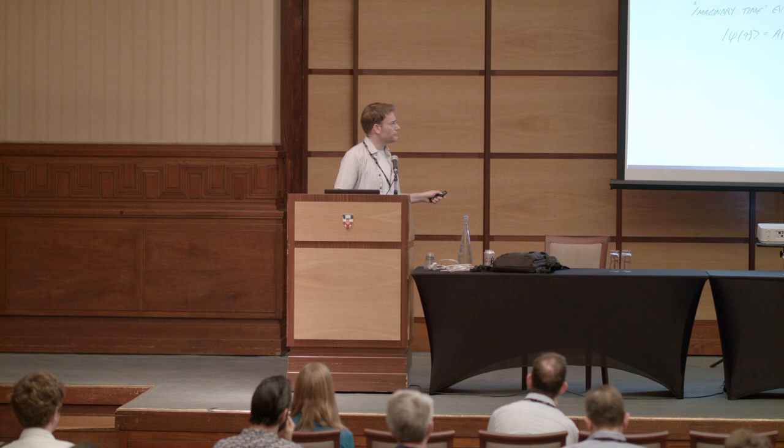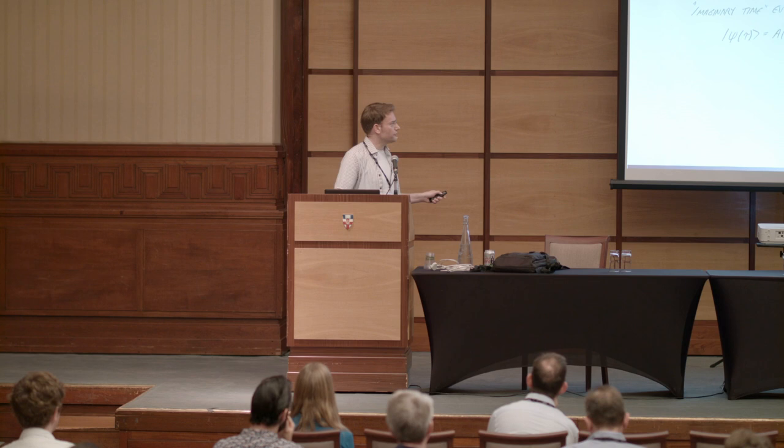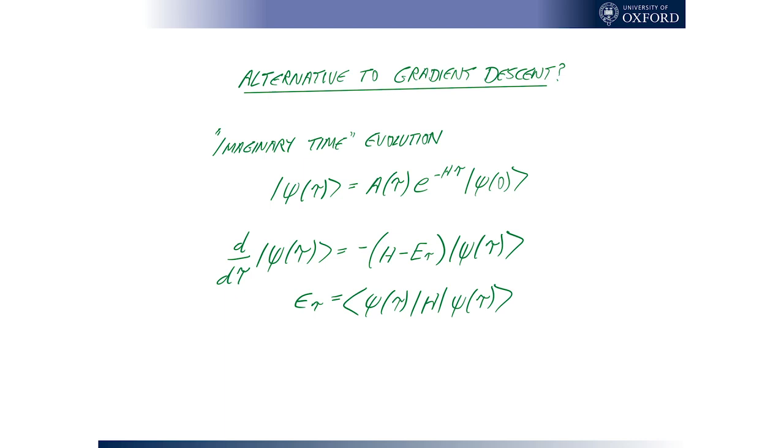It's attenuating it exponentially, depending on the energy, what it sees. So, if we imagine expanding this in the eigenbasis of the Hamiltonian, this thing will kill off most aggressively the high energy terms, less aggressively the low energy terms. And if the ground state is zero for simplicity, it will leave that one alone. So, this thing will distill down to the state that we actually want.